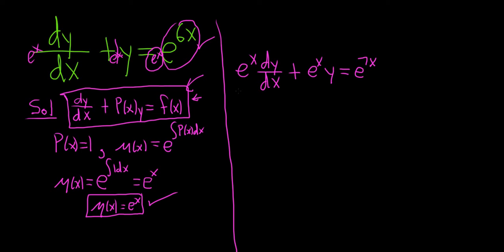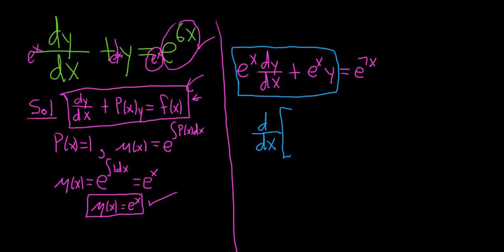Now here is the most important — the key step. All of the left-hand side will magically become d/dx of your integrating factor times your unknown function, so d/dx of e to the x times y. I say 'unknown function' rather than always 'y' because sometimes you have different variables like dx/dt or dr/dθ — it depends what you're solving for.